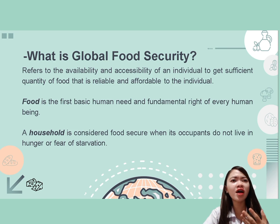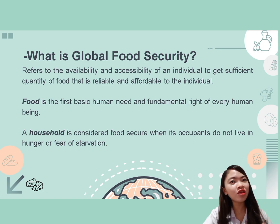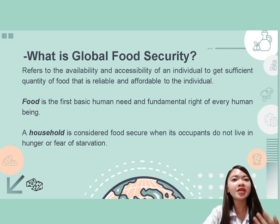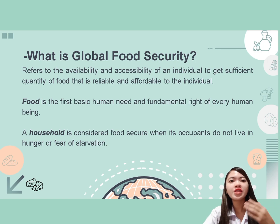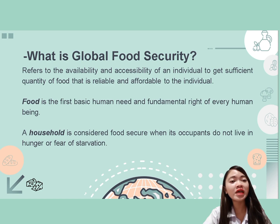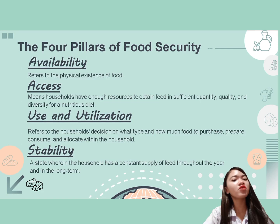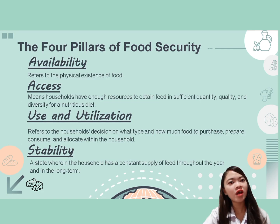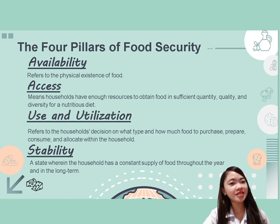We can also consider our households and parents as food secure because they do not let us go hungry. Similar to global food security, it looks at the quality of every food served at the table to ensure no one gets sick and what we eat is safe. We have what are called the four pillars of food security: availability, access, use and utilization, and stability.